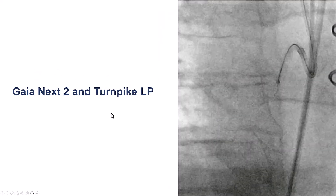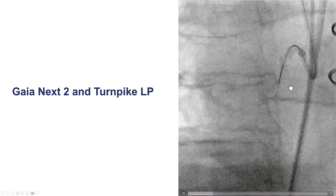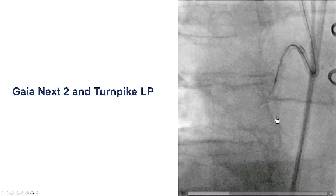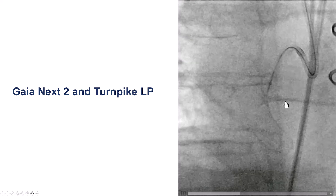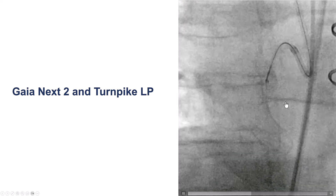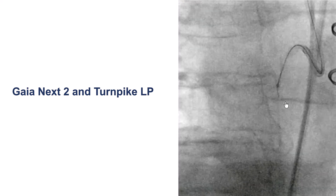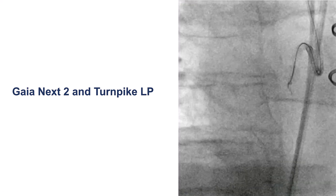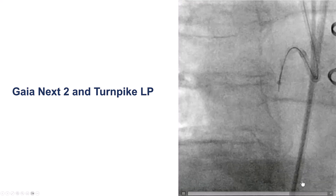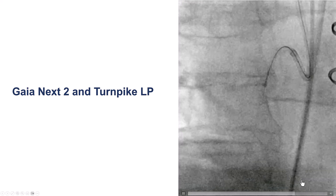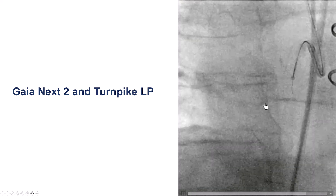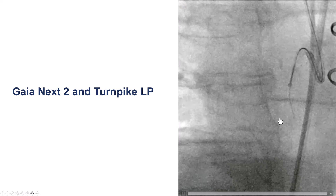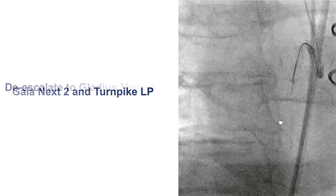We then tried with a Gaia NEX2 through the same Turnpike LP microcatheter. We did have some resistance along the proximal cap, we redirected the guidewire, and then we had difficulty, but at some point there was movement of the guidewire across the proximal cap, and it seemed to advance along the course of the vessel.